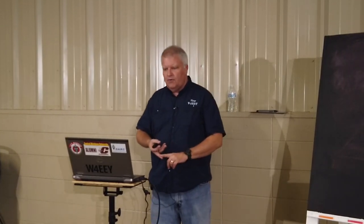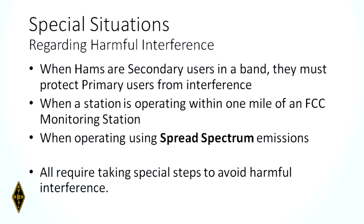When hams are secondary users on a band — like 30 meters and 60 meters — you really have to protect the primary users from interference. Another case when you have to protect from interference is if you happen to be within one mile of an FCC monitoring station, or if you're operating using spread-spectrum transmissions. All three of those situations require taking special steps to avoid harmful interference.